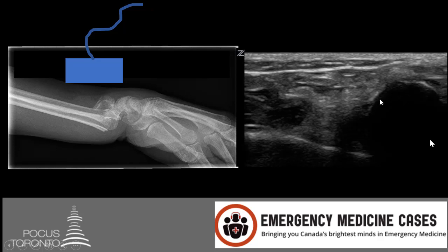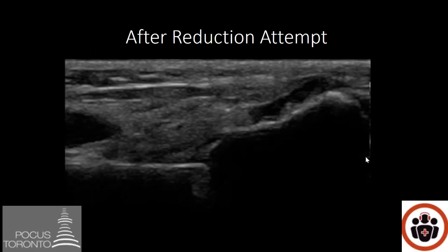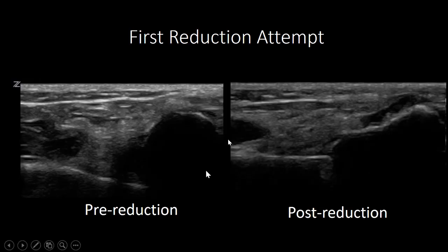Ideally we want to reduce that displaced fragment back into alignment. During the reduction attempt, the doctor felt he had an adequate reduction based on tactile feel, as the deformity was much improved. However, when we placed the ultrasound probe back on the patient, we noticed the long bone still had a gap before reaching the actual distal fragment. Comparing the initial ultrasound to the post-first-reduction ultrasound, the gap was more minimized but still not quite right.